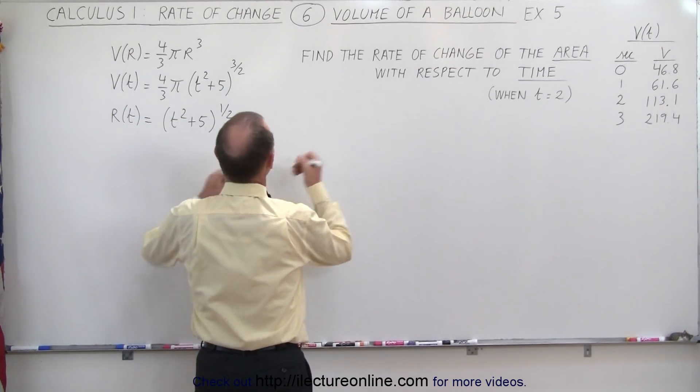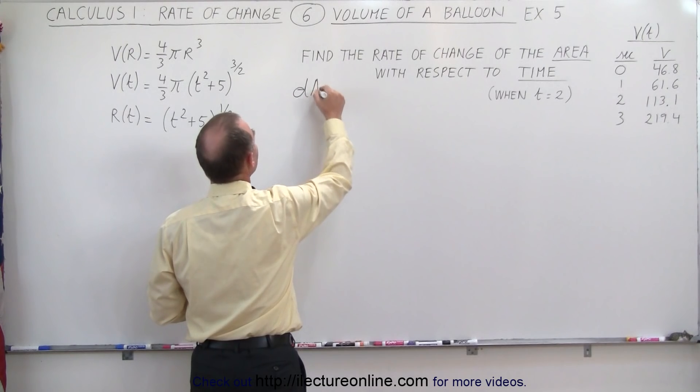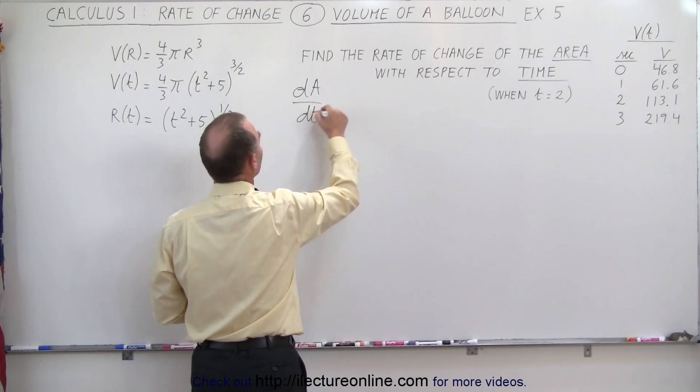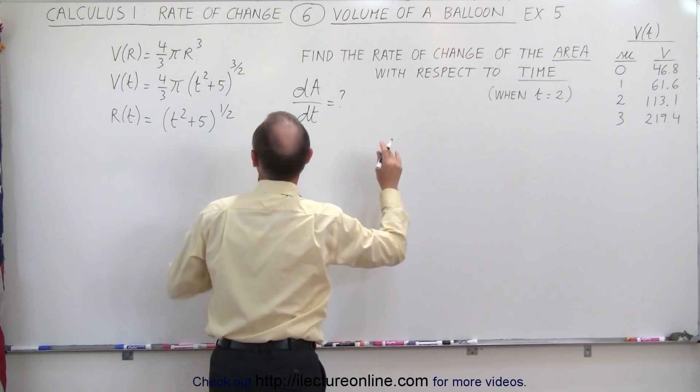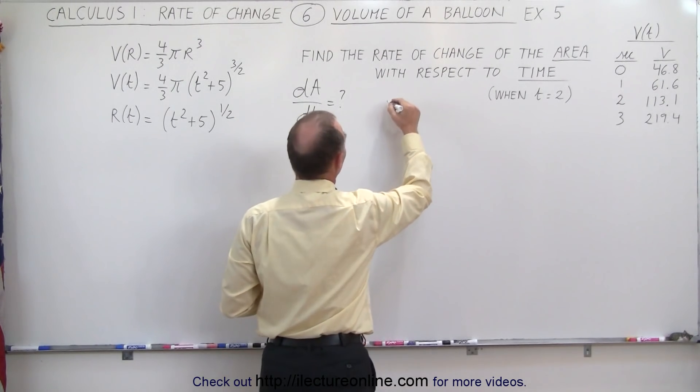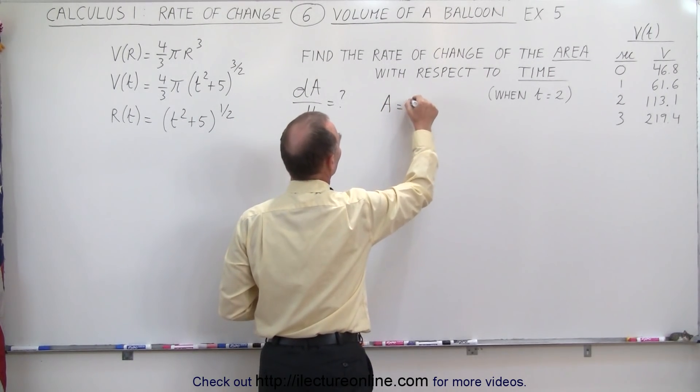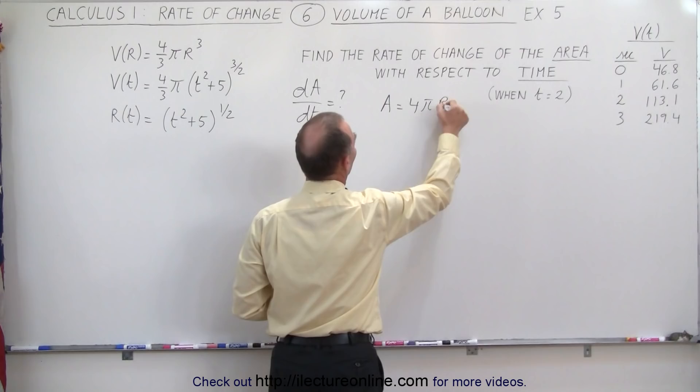And what that means is we're trying to find dA/dt, and again, we need to have the equation for the area. The area is equal to 4πr².